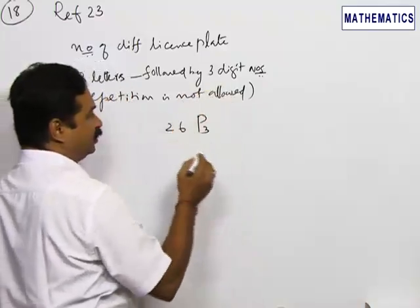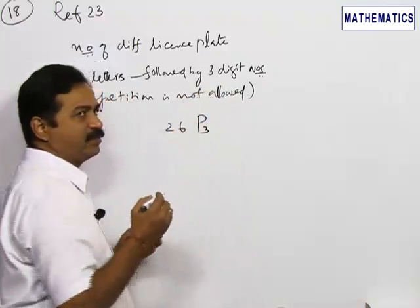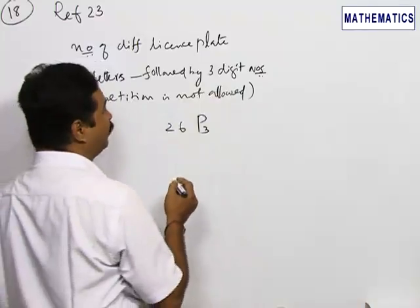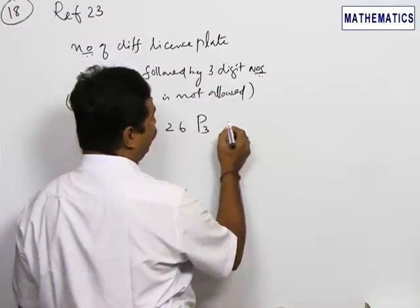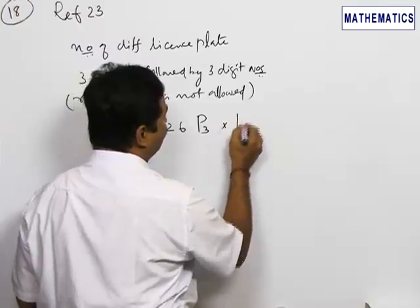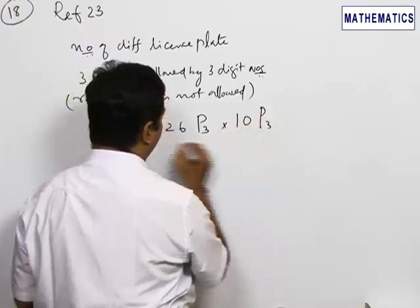Similarly, out of the 10 digits, that is you have to take from 0 to 9, 10 numbers, the 3 digits has to be filled. It can be filled in 10P3 ways.